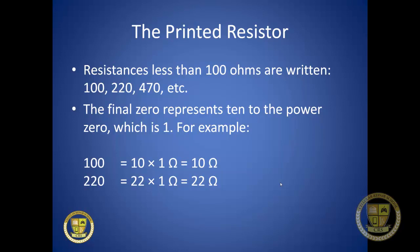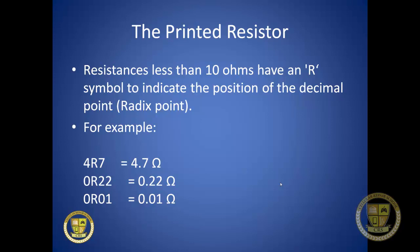Resistances less than 100 ohms are written in a similar style where the final zero represents ten to the power of zero, which is one. So a marking of 100 means 10 × 1 = 10 ohms. Printed resistors are found more often in larger devices like gaming consoles, not often in cell phones. Resistances less than 10 ohms use an R symbol to indicate the decimal point — for example, 4R7 means 4.7 ohms, 0R22 means 0.22 ohms, and 0R01 means 0.01 ohms.